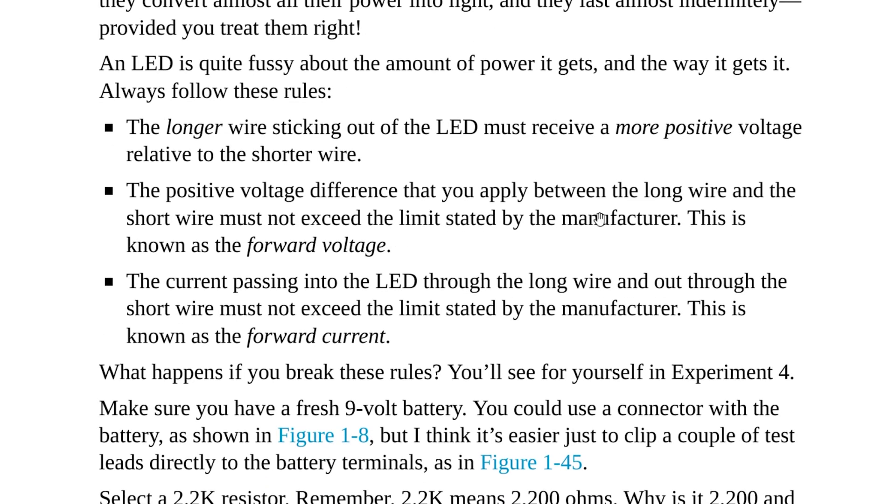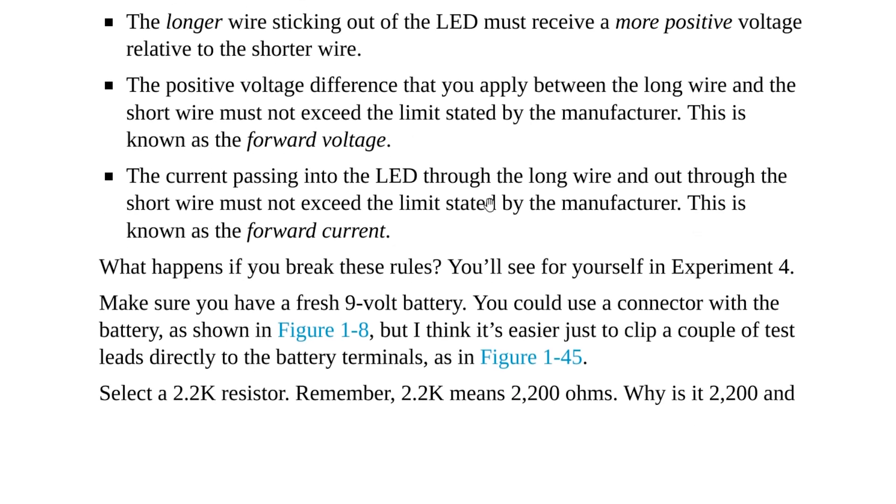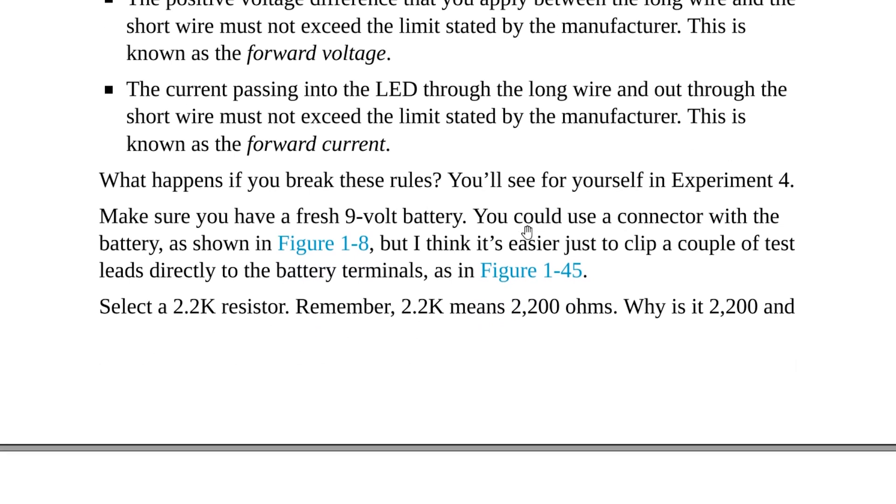The positive voltage difference that you apply between the long wire and the short wire must not exceed the limits stated by the manufacturer. This is known as forward voltage. So the forward voltage can't be too high, otherwise you're going to blow out the LED. The current passing into the LED through the long wire and out through the short wire must not exceed the limits stated by the manufacturer. This is known as the forward current. So again, not too much current going through the LED.